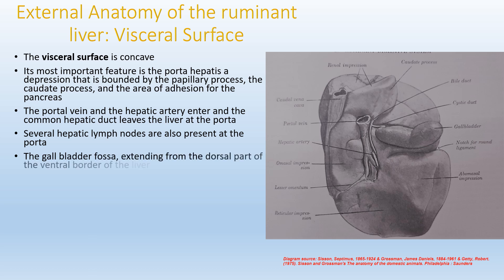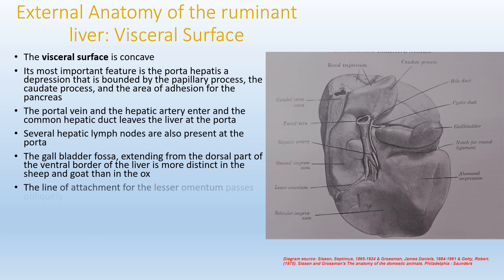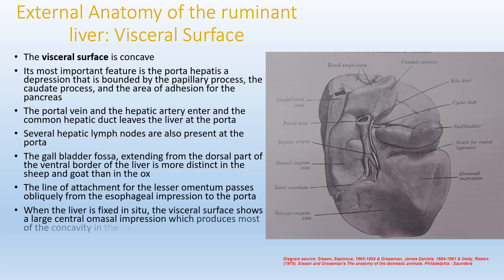The gallbladder fossa, which extends from the dorsal part of the ventral border of the liver, is more distinct in the sheep and goat than in the ox. There is also a line of attachment for the lesser omentum which passes obliquely from the esophageal impression to the porta hepatis. When the liver is fixed in situ, the visceral surface shows a large central or meso impression which produces most of the concavity in the ox.